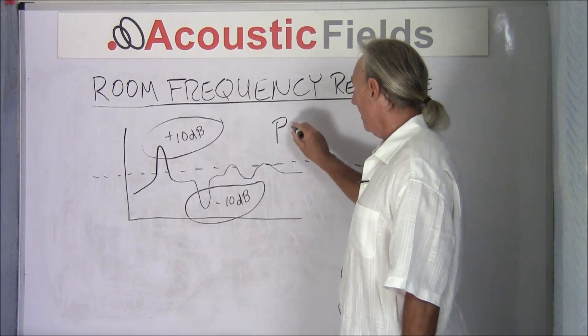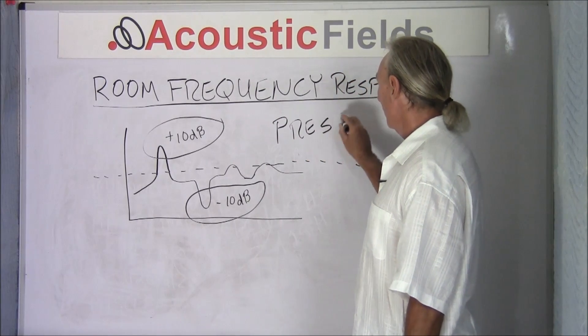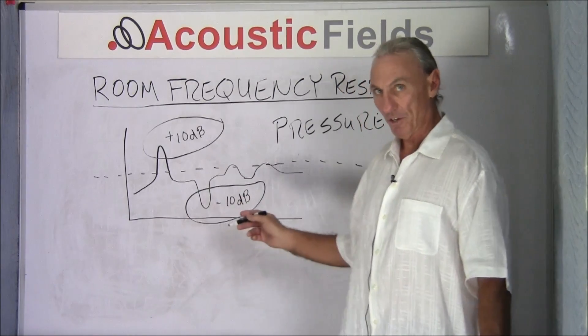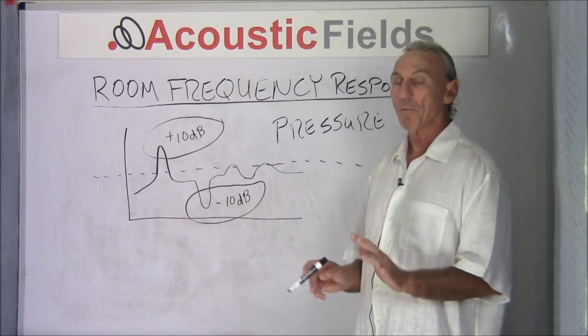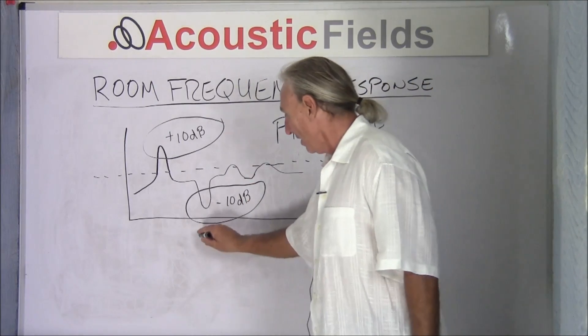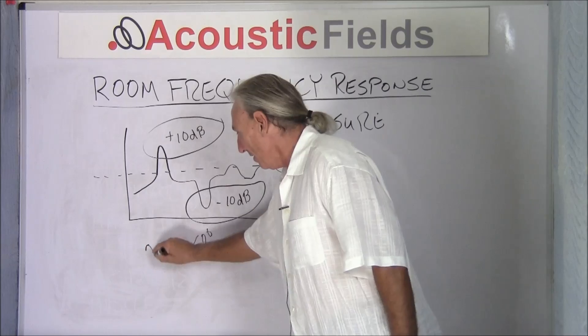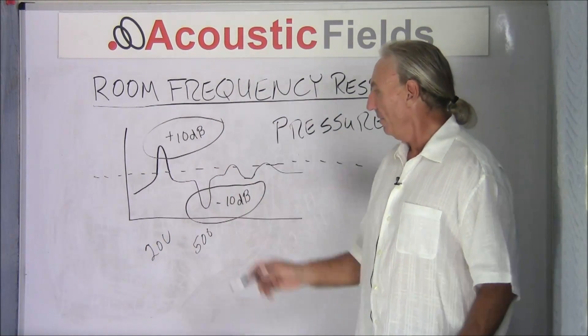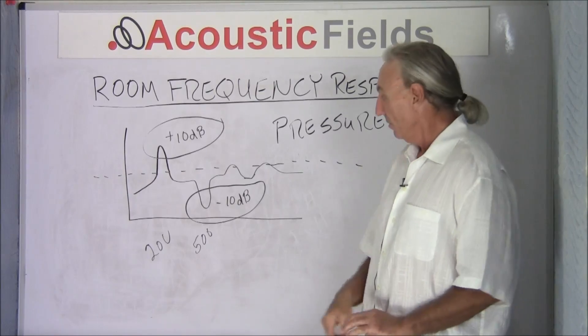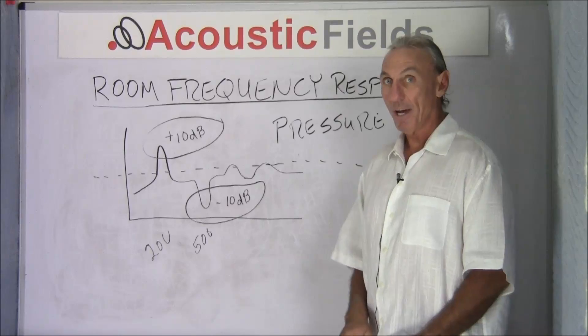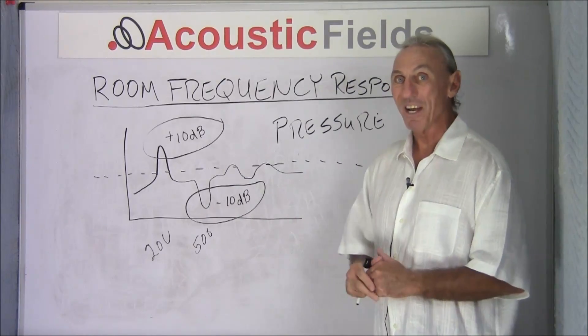Well the one thing they have in common is pressure. These signatures are both the room's reactions to certain frequencies, let's say here and here, the room reaction to 500 and 200 cycles. So it really doesn't like 200 and it really doesn't like 500.